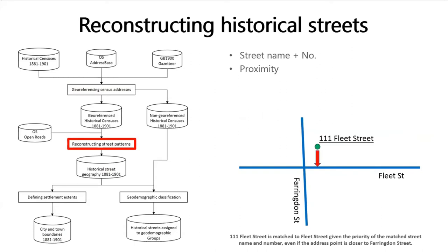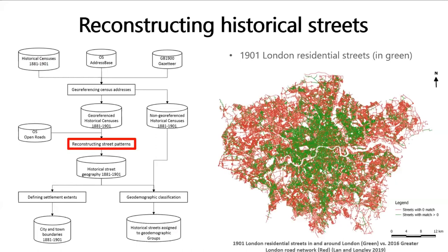To reconstruct the historical streets, we further match the geocoded address points to the modern OS Open Roads based on matching street names, numbers, and their spatial proximities. A street segment with at least one matched address point is considered to be an existing street in that historical period. This map shows the reconstructed 1901 London streets in green superimposed on top of the 2016 road network of the Greater London Authority area in red. Due to street renaming and demolition during various redevelopment and slum clearance at the later stage, we haven't reconstructed every single residential street.